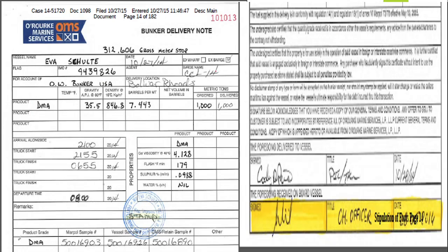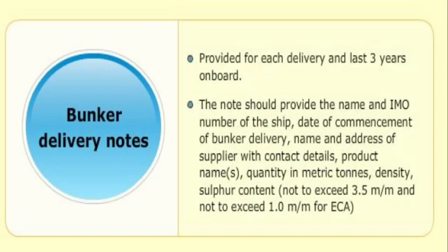Here is another example of a BDN — they can look different but you must make sure to mention all ten basic points: the name of the supplier, the IMO number of the ship, what the product is, the density, sulphur content, quantity, flash point, the timing alongside, all sample numbers, and the signature. The BDN must be kept on board for a minimum period of three years after you have taken the bunker.